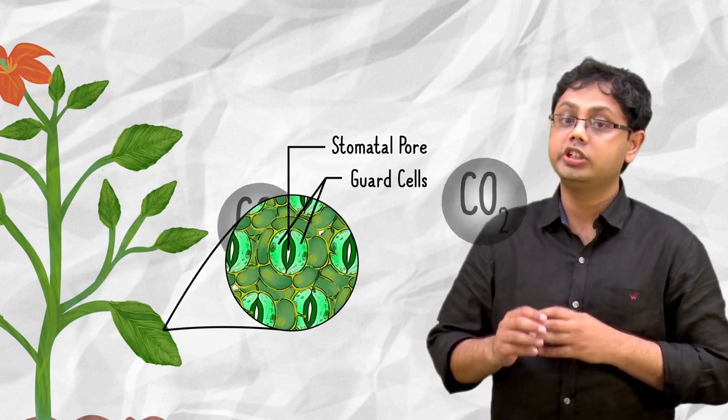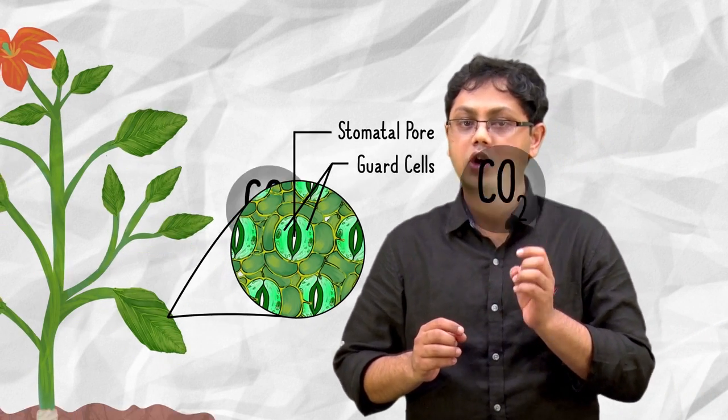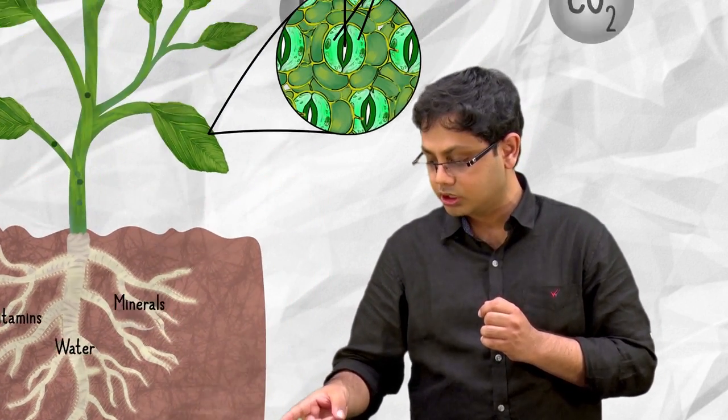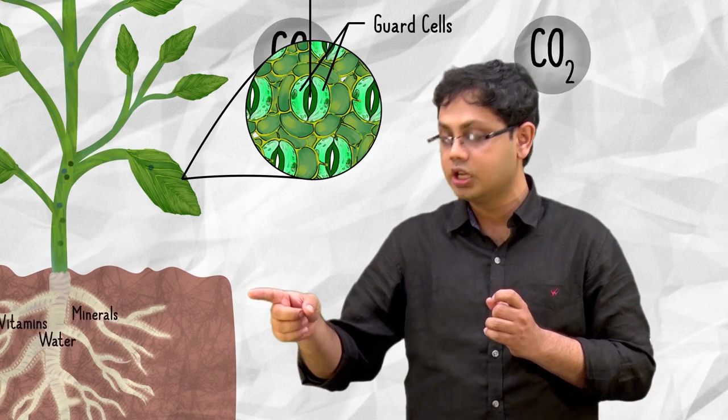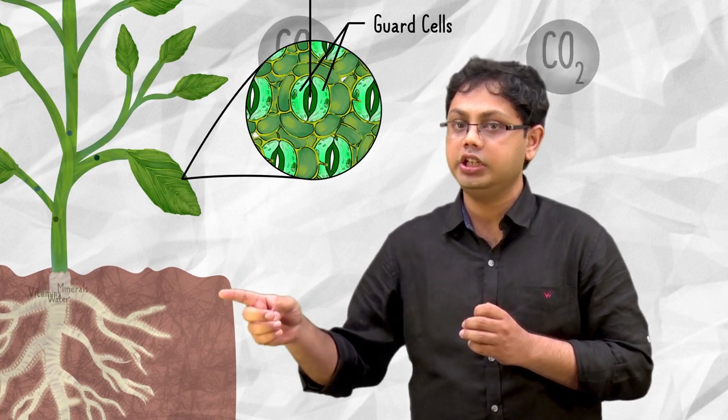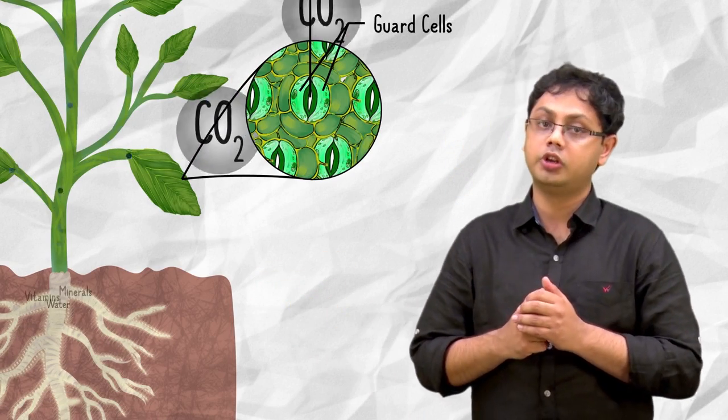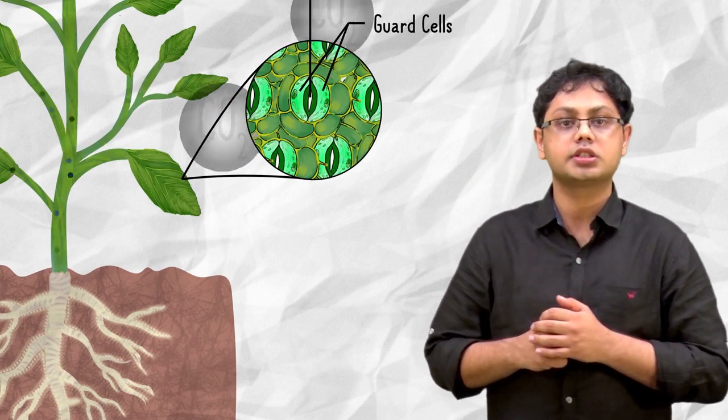The water, vitamins, and minerals required as raw material are absorbed by the roots and is then transported from the roots through the stems to its branches and finally to the leaves where most plants carry out this process of making the food or the process of photosynthesis.